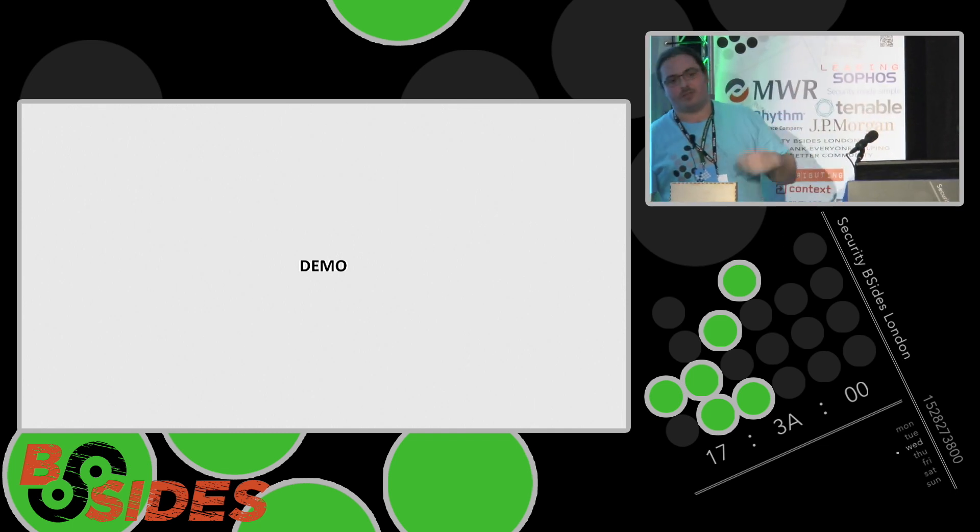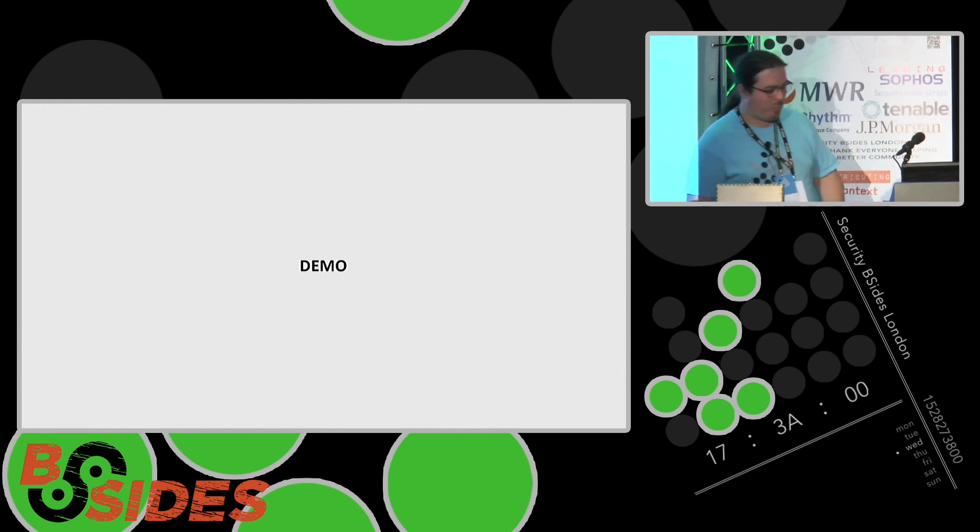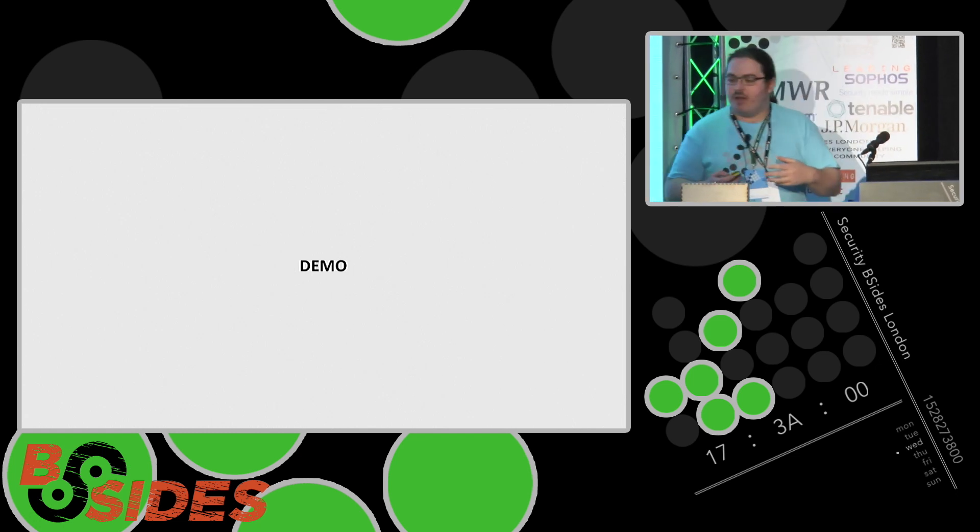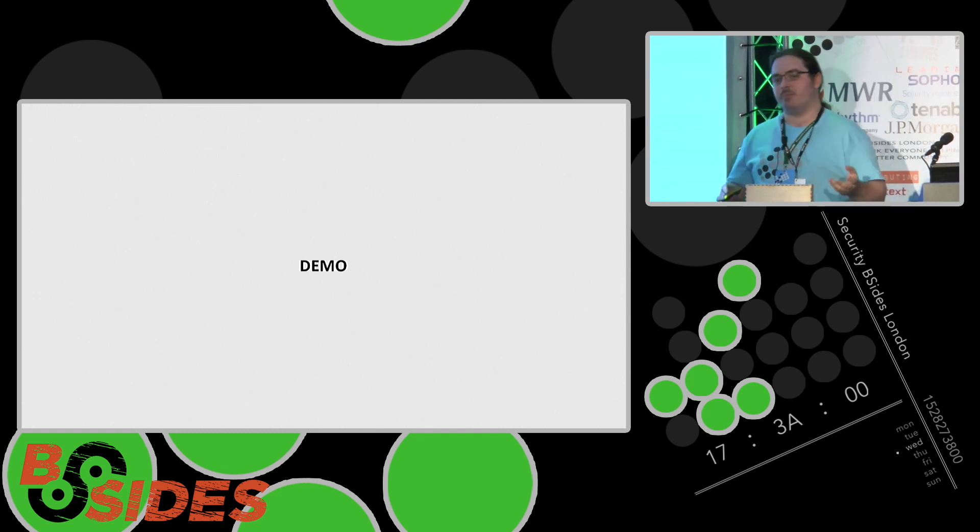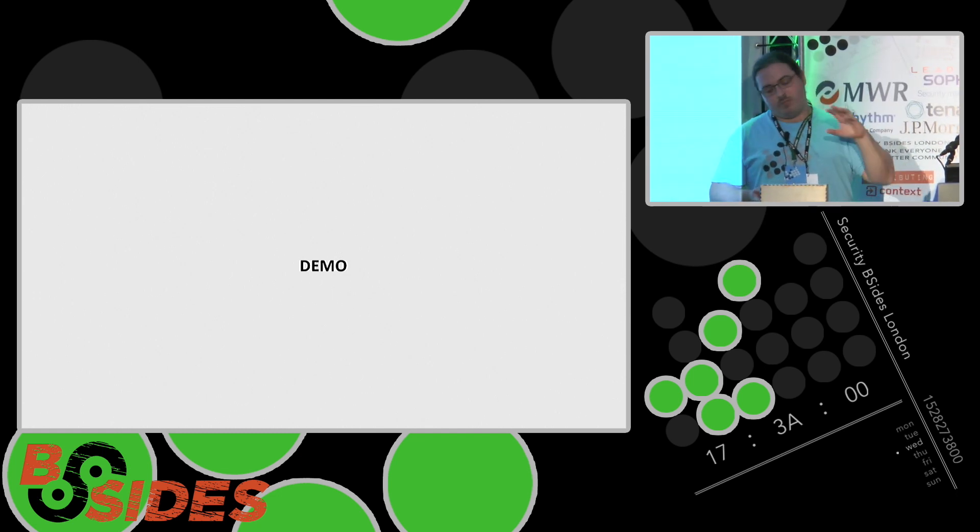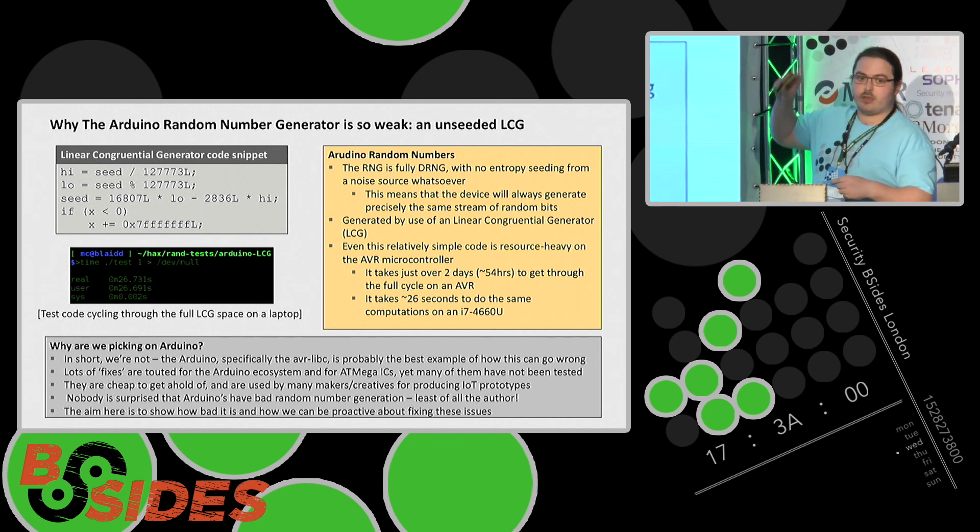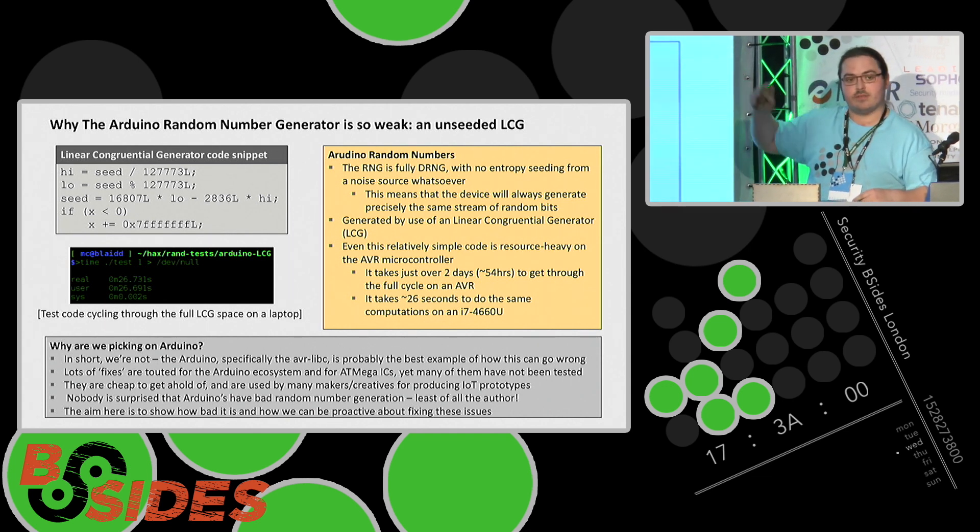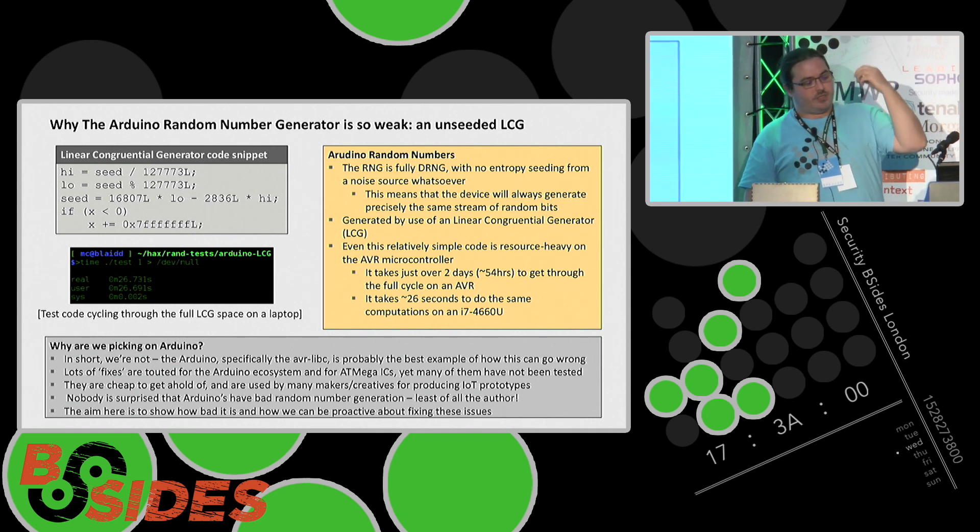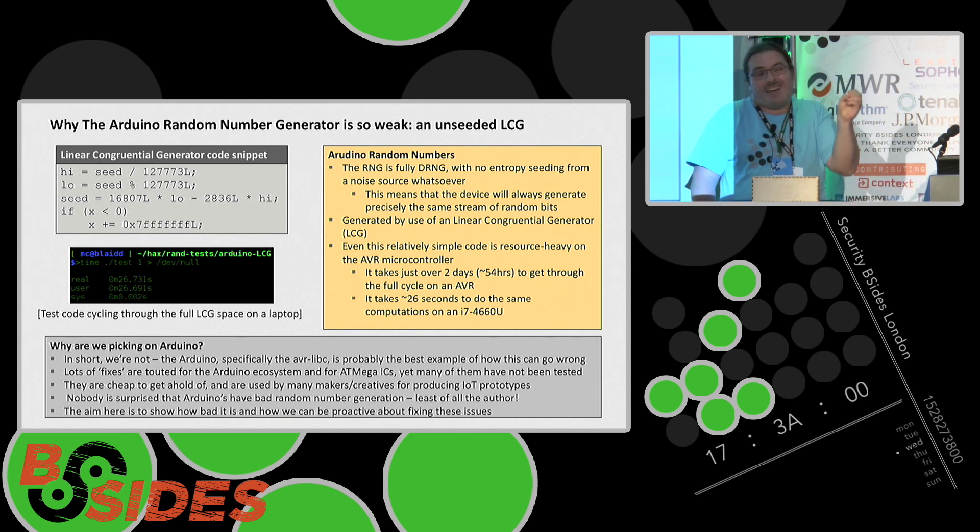What you saw there was a fully deterministic random number generator running on an Arduino. The Arduino has a very limited space. It's an 8-bit microcontroller, the ATMega 328P chip. This is why it's bad. What you have is a thing called a linear congruential generator, an LCG. That's the five lines of code, top left. What that is doing is just generating numbers, feeding back into itself. They look kind of random.